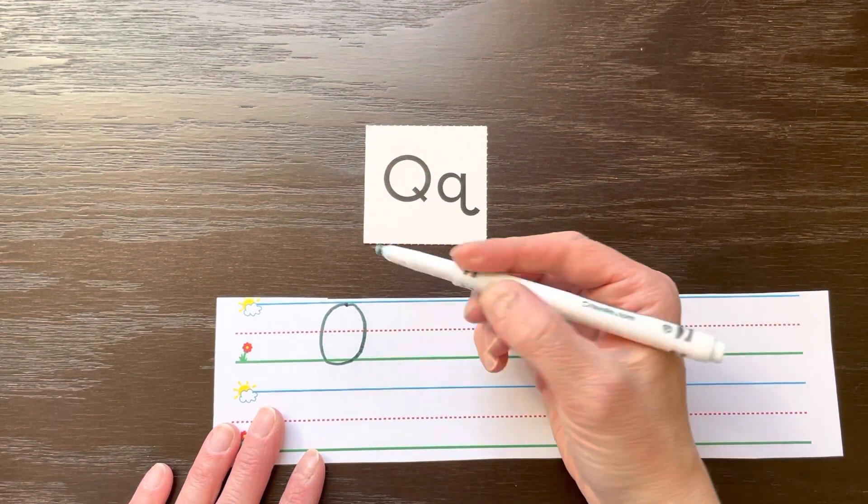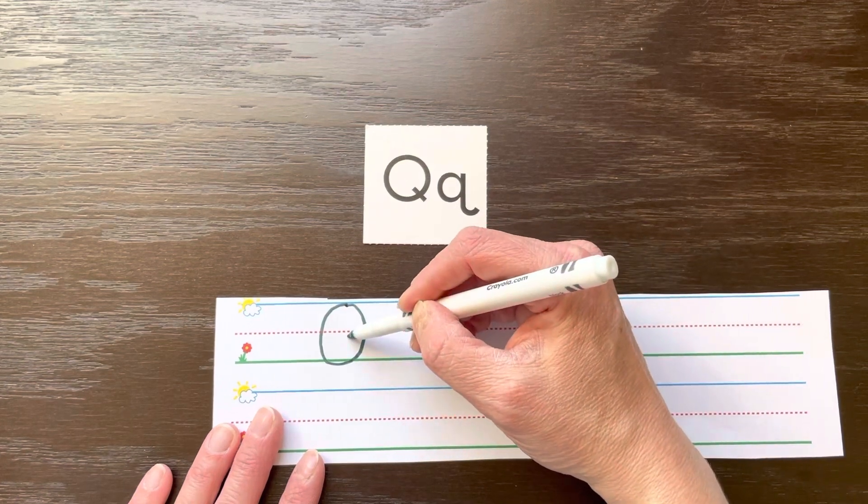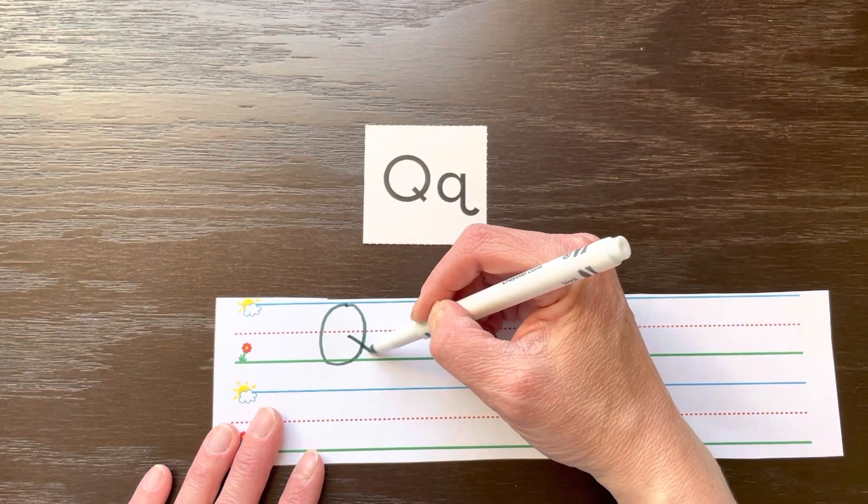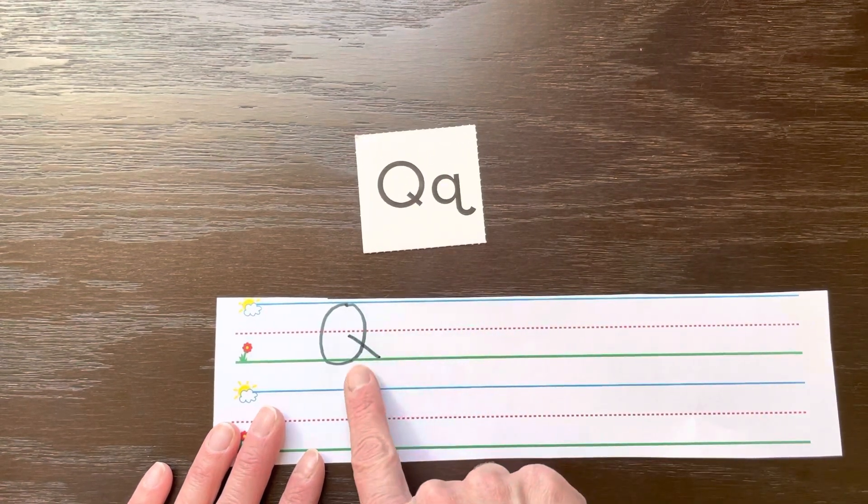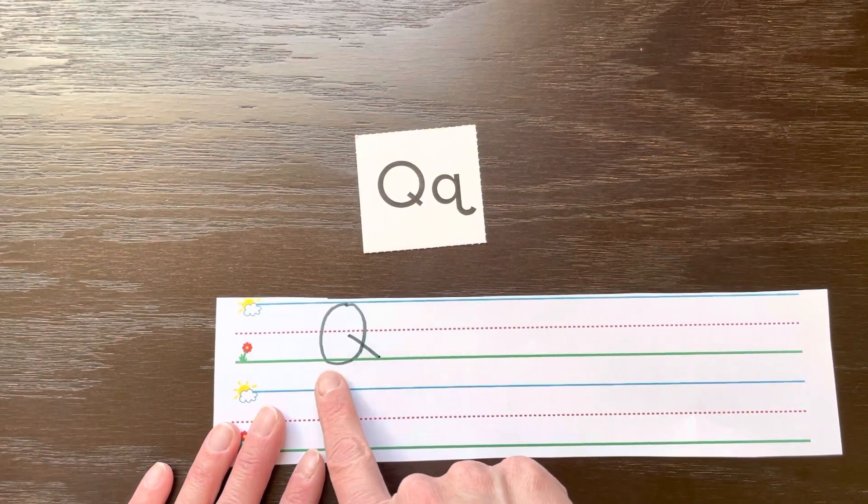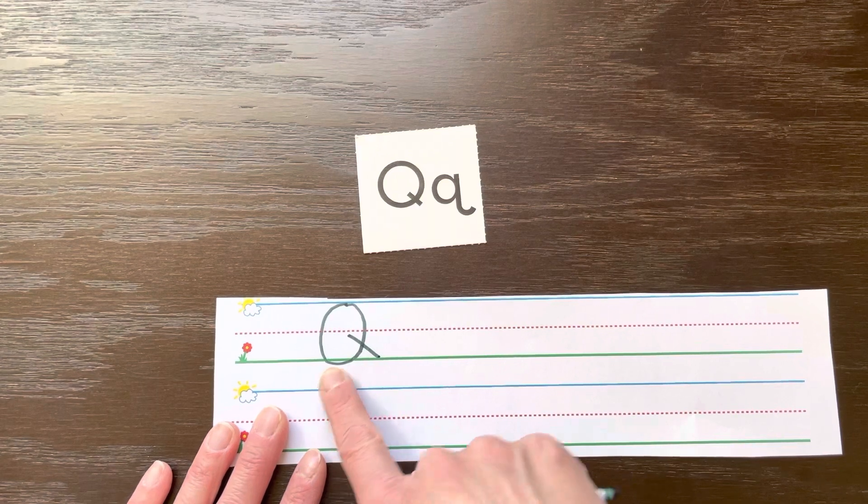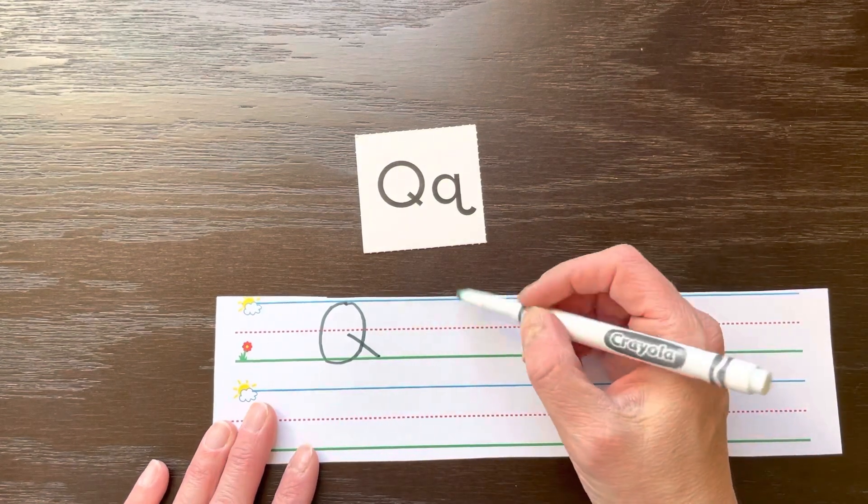Then we're going to pick our pencil up, we're going to go inside the letter Q and we're going to slide out. And that's how we add this little line that makes it a Q. Let's try that again because this one you can see I went a little under the line, which we don't want to do. So I'm going to try to do better this time. Here we go.